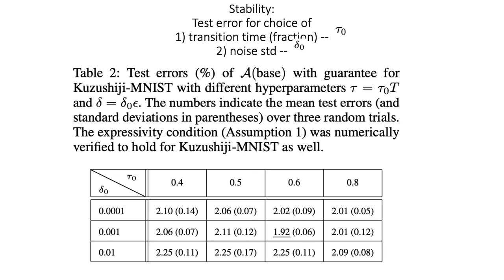We also check the stability for different choice of hyperparameters. In our modified algorithm, there are two hyperparameters. One is the fraction of transition time. The other is the noise standard deviation. From the following table, if we choose 60% of the original training epoch to be phase one and the rest 40% to be phase two, and choose the noise standard deviation 10 to the minus 3, then we get the smallest test error for this special case of dataset.